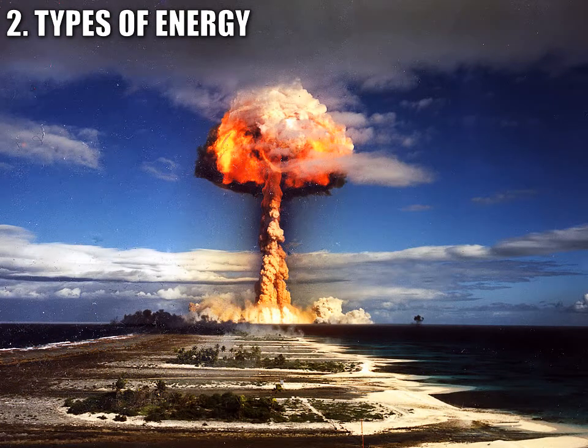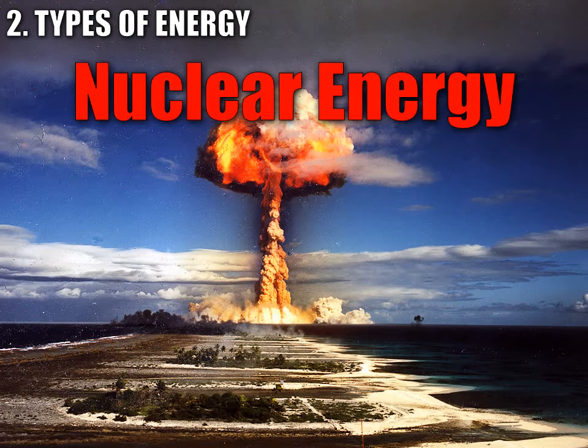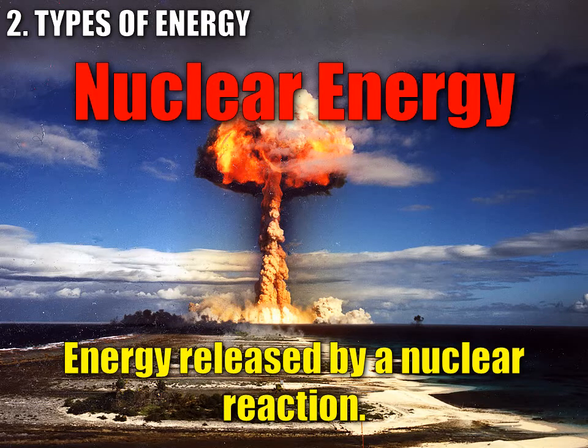The next form of energy is nuclear energy — energy released by a nuclear reaction. Don't confuse this with chemical reactions. Chemical reactions take place at a molecular level, whereas a nuclear reaction takes place inside the nucleus of an atom. There are two ways that nuclear energy can be released: fission, which is when a nucleus divides or splits in two, and fusion, which is when two nuclei fuse together into one. This is nuclear energy.